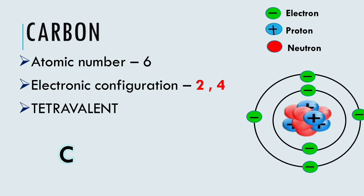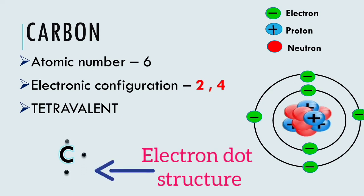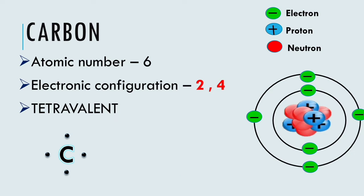Let's look at the electron dot structure of the element carbon. In the electron dot structure, we represent only the electrons present in the outermost shell. Since carbon has 4 electrons in the outermost shell, we need to show only those 4 electrons around the carbon symbol C.